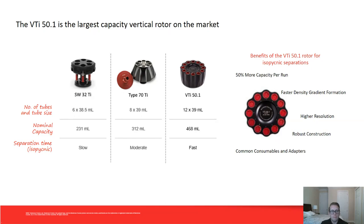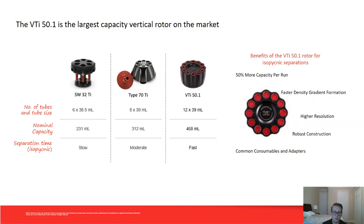Looking at these rotors in more detail: in terms of volume, the VTI 50.1 is the newest rotor we've commercialized, with a larger volume than any of the others — 12 by 39 mL capacity for a total of nearly 500 mL. If you look at how long an isopicnic separation takes in each rotor, the VTI 50.1 is very clearly the fastest and also provides the best resolution. So you can form these gradients faster, get higher resolution, and this new rotor uses basically the same consumables — tubes, adapters — as the rest of the rotors.